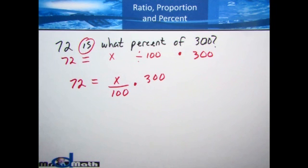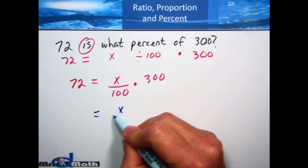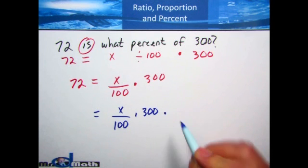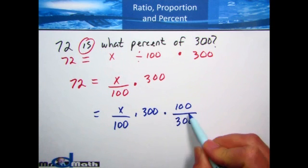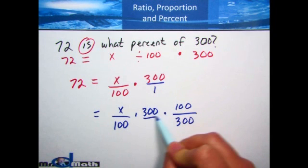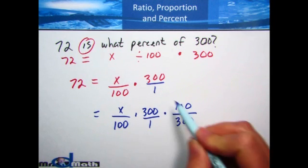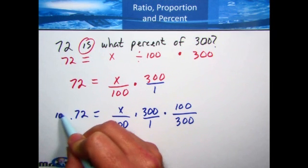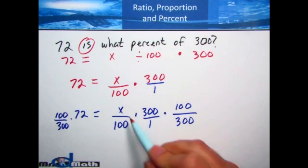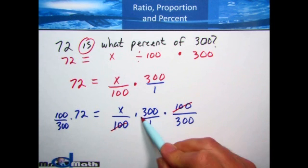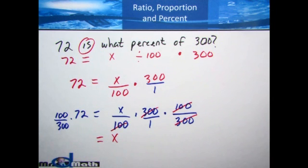Here's how we're going to solve this equation. Since x is being divided by 100 and multiplied by 300, we're going to multiply by 100 and at the same time divide by 300 on both sides. 300 is like 300 over 1, so the numerator goes to the bottom and the denominator goes to the top. I do the same thing on the other side of the equal sign. So it's going to be 100 over 300 times 72. The 100s cancel and the 300s cancel, leaving just x.